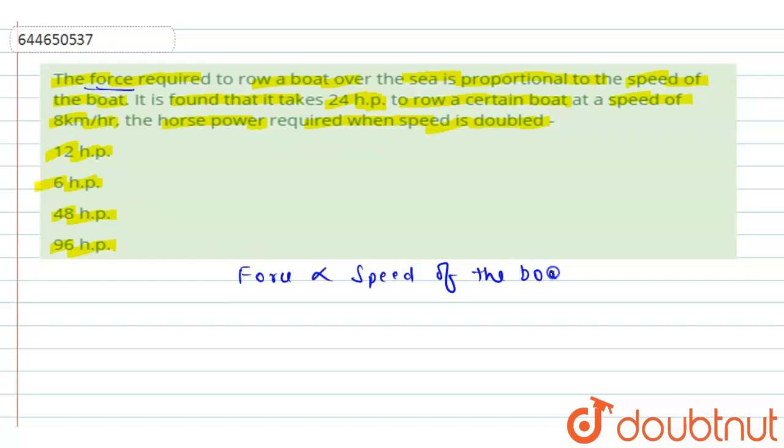We can write F is proportional to v, where speed is v. So we can write F equals k times v where k is any proportionality constant. Let this be equation number one.